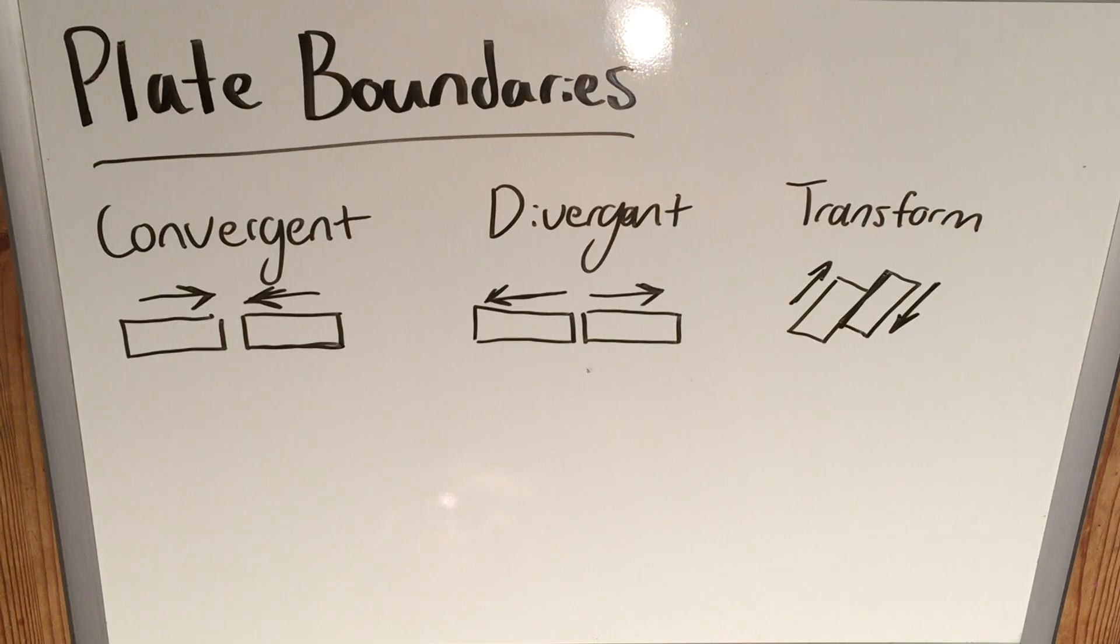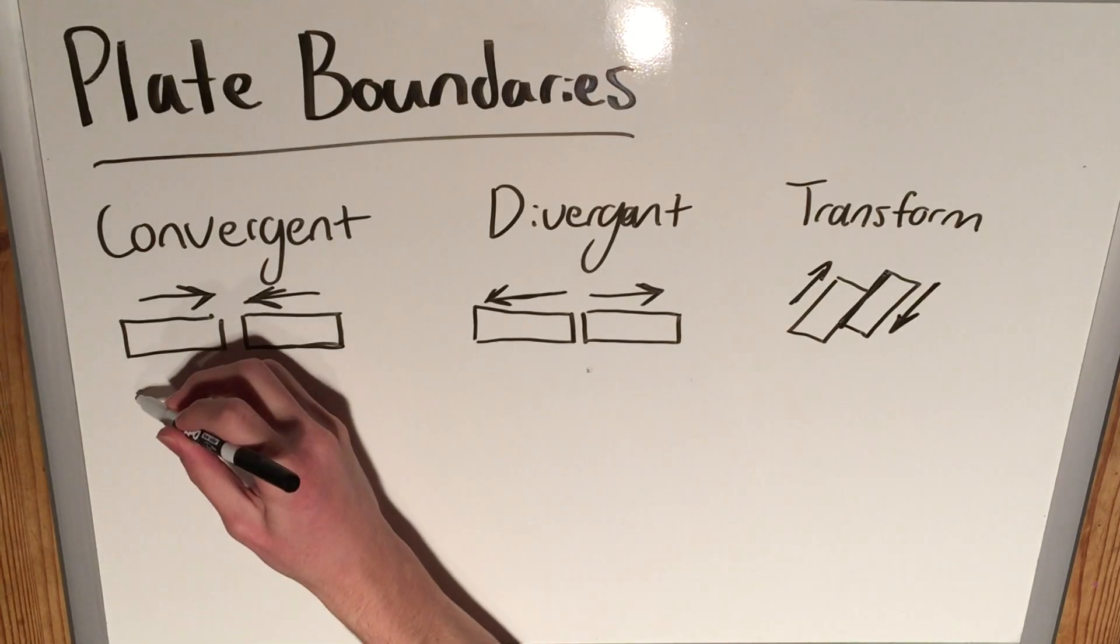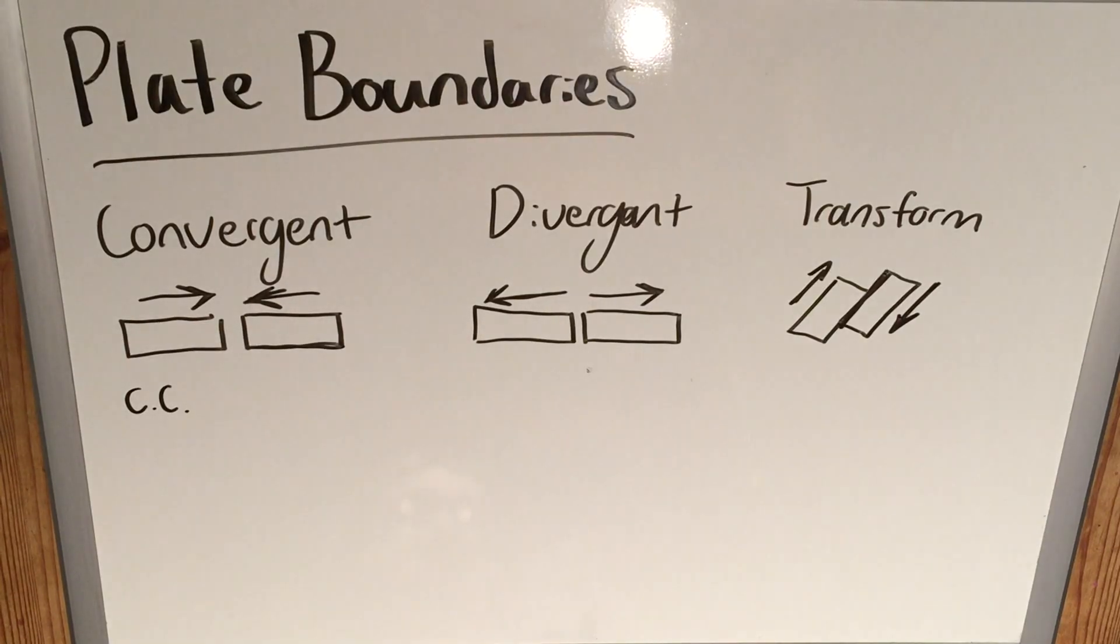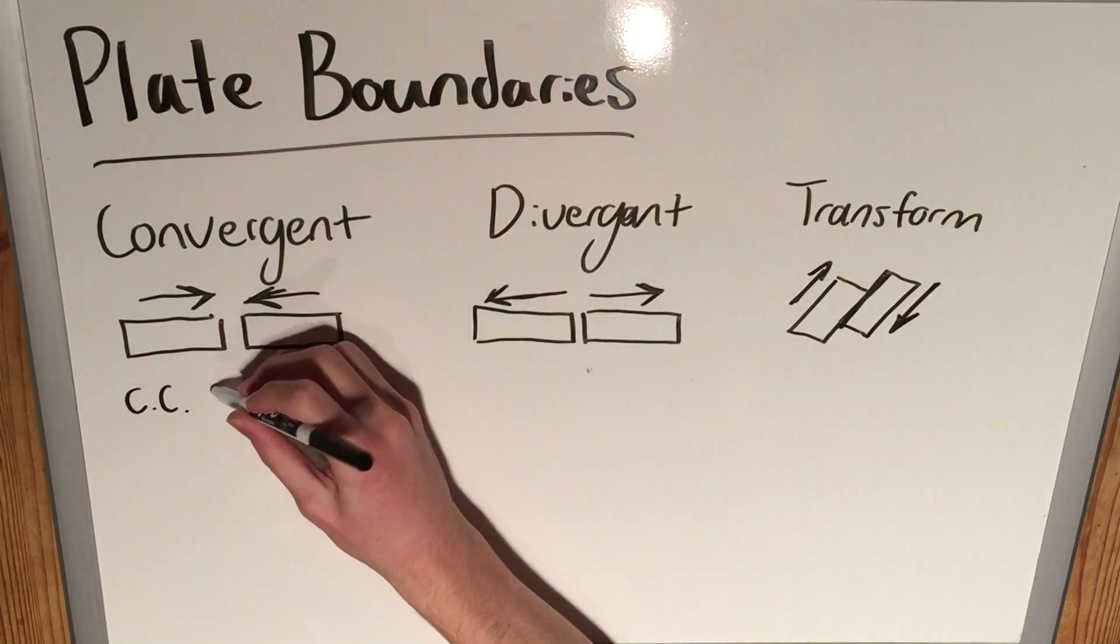So the names are pretty self-explanatory, but then we can have a whole bunch of different outcomes at each one, which I'll just sort of outline in this video. At convergent plate boundaries we can have a few things. One, if there is a continental-continental collision, so we'll call that C.C., continental-continental, two plates that are both continental crust collide, then we're going to have the formation of mountains.